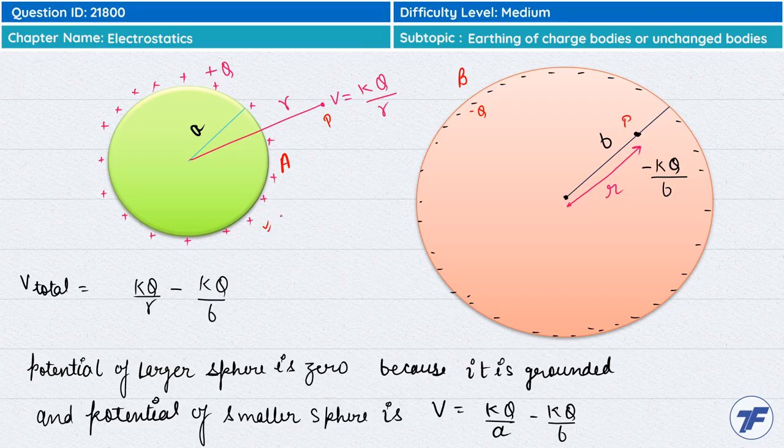Here are the points of the sphere. B ki wajeh se electric potential likhunga, dono ko sum kar dunga, to electric potential due to A sphere hoga total charge into K divided by R.